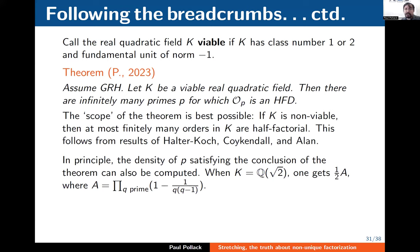Let me announce more fully what follows from these methods. I'll call a real quadratic field K viable if it has class number 1 or 2 and fundamental unit of norm -1. Assuming GRH, every viable real quadratic field has infinitely many orders of prime conductor inside it that are half-factorial domains. The scope is best possible: if K is a real quadratic field that is not viable, then at most finitely many orders in K are half-factorial — that follows from results of Halter-Koch, Koykendall, and Lettl, already known.